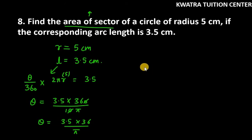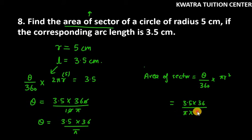Now we have to find area of sector. Area of sector we know is theta over 360 into pi R square. Now theta value is 3.5 into 36 and pi at the bottom, and we have 360 as well.